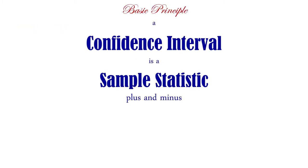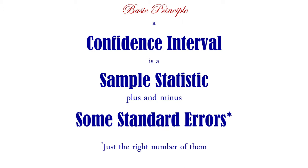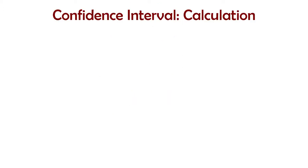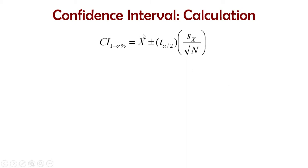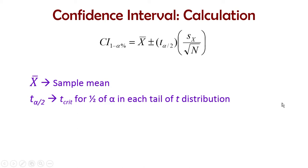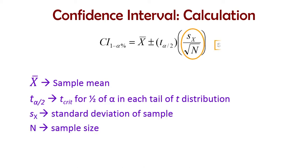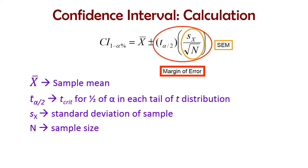So remember this basic principle: a confidence interval is just a sample statistic plus and minus some standard errors — like 1.96 standard errors or 2.58 standard errors, just the right number of standard errors. Calculating the confidence interval is the sample statistic — the mean here — plus or minus a certain number of standard errors. The t tells us how many standard errors, and the standard error value itself is the size of those steps. That part is the standard error of the mean, and that whole thing together is the margin of error. So that's a confidence interval for a single mean.